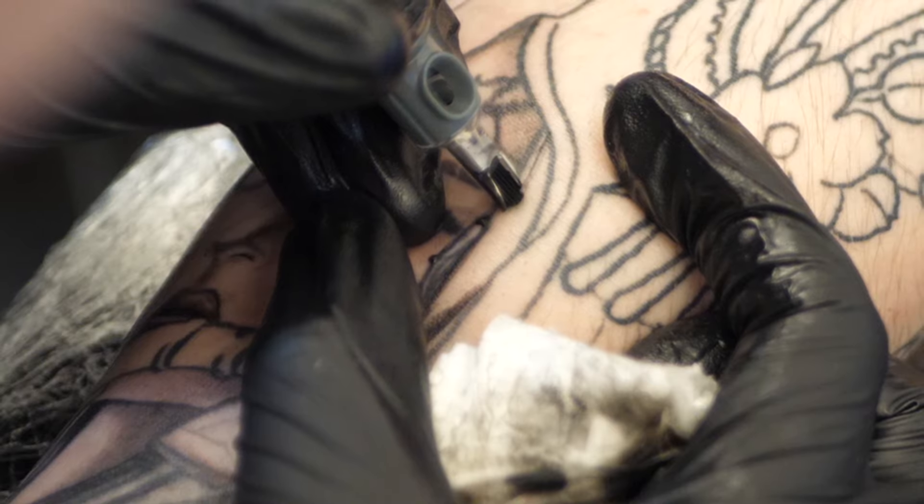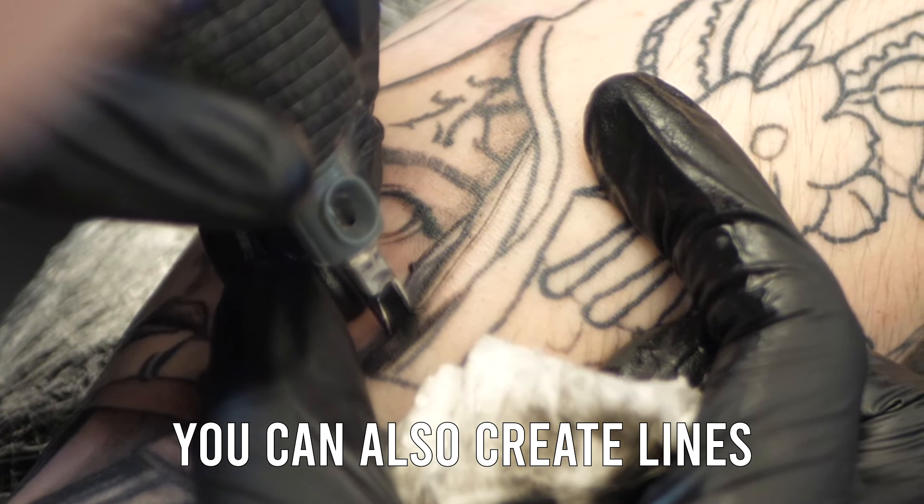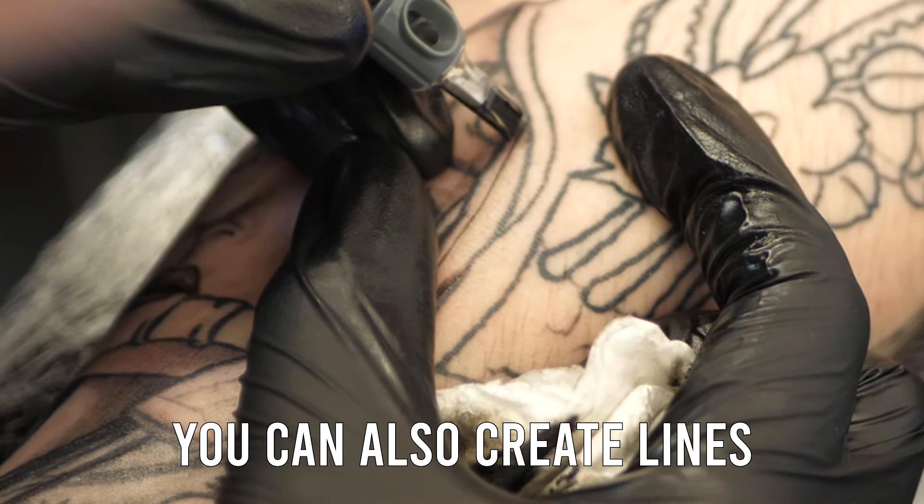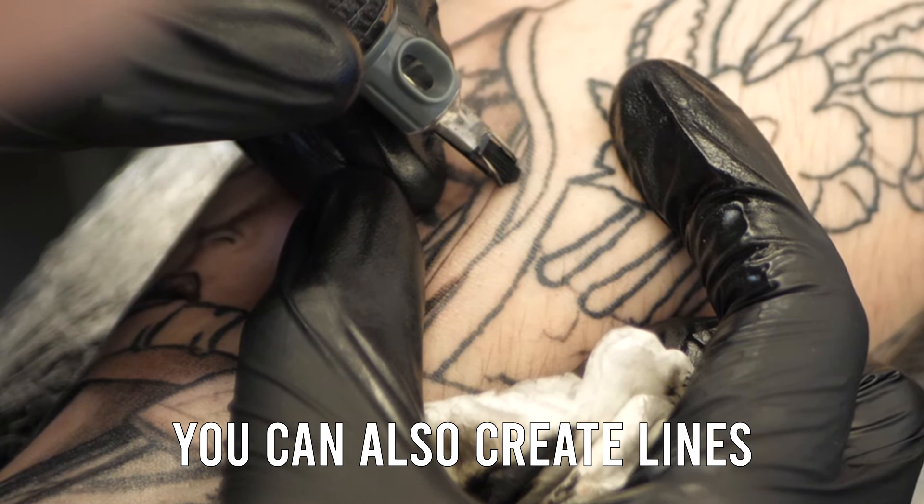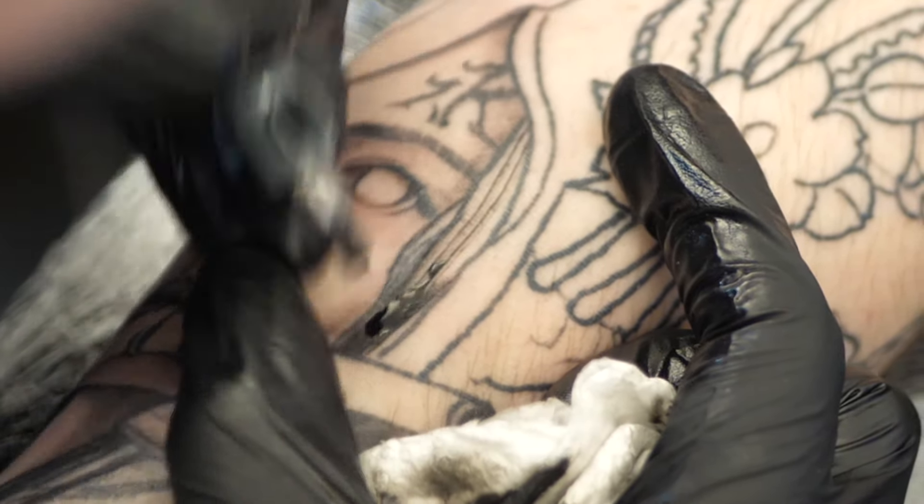So there's a lot of versatility with a magnum, and another tip as well is using the edge of the magnum you can create lines using this as well. So you can use the whole bottom row of needles like I'm doing here, but you can use the corner of the machine and just use a single needle to create a small line.